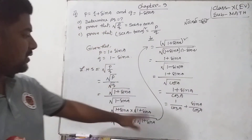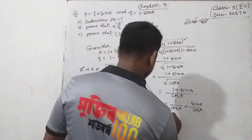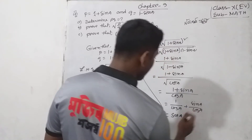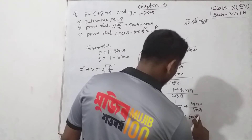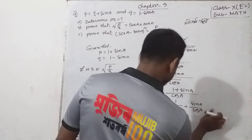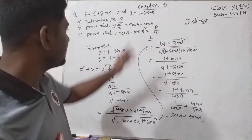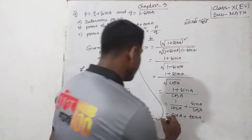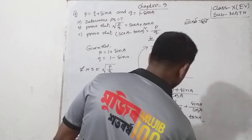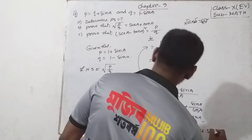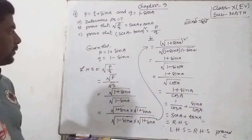We know 1 by cos A means sec A, and sin A by cos A equals tan A according to trigonometric formula. So left hand side equals sec A plus tan A. Our right hand side is also sec A plus tan A. Therefore, left hand side equals right hand side. Proved. I hope everybody understands number B.